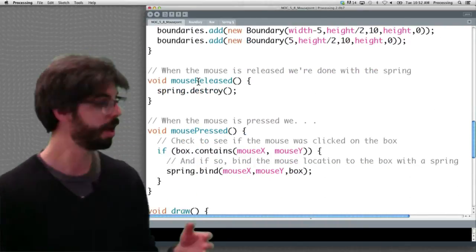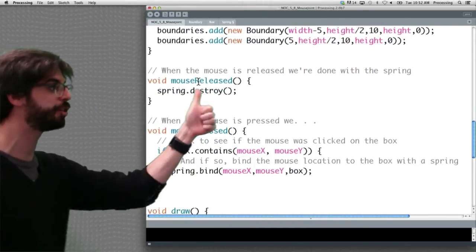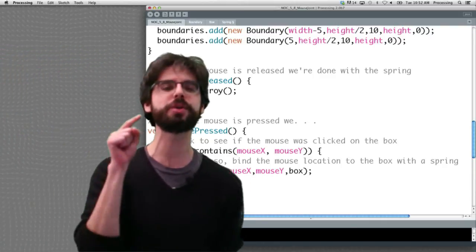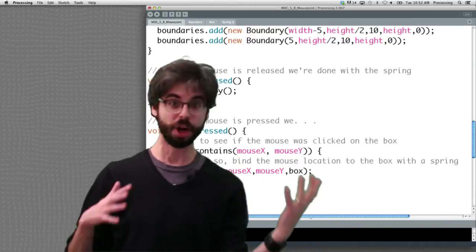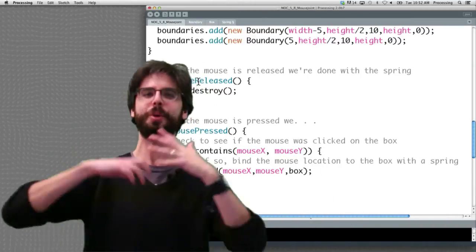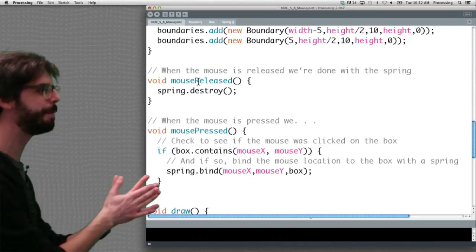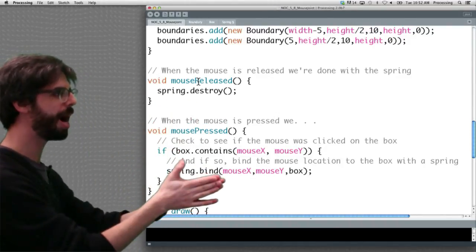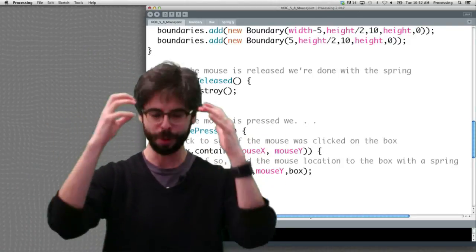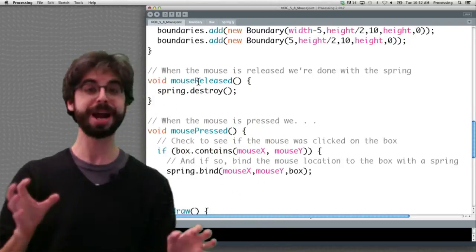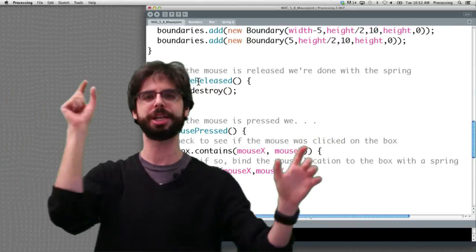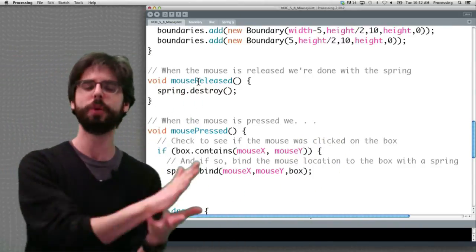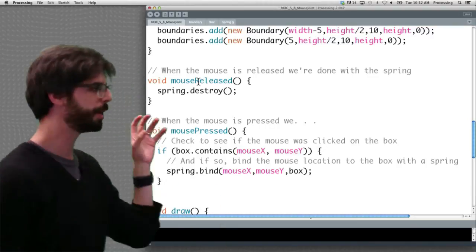Here's what I was talking about. Mouse release, that's where we destroy the joint. Mouse pressed, if the box contains that location, so we're only creating the joint if we click on it. You know, this is a choice that we're making depending on what kind of interaction we want. But in this example, if we click on it, then bind the spring to the box. This is really interesting. Another scenario, here's an exercise for you. Try to create a scenario where we have multiple boxes and you can click on any one. How would you do this with a loop and an array to test which one are you clicking on? Which one should that spring get bound to?